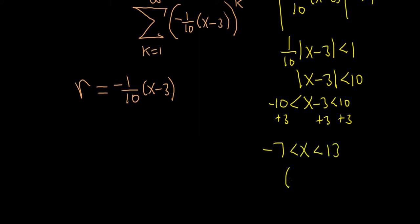And so the final answer is negative 7 comma 13. And that's it. We don't have to check the endpoints. So again, when you use the geometric series test,